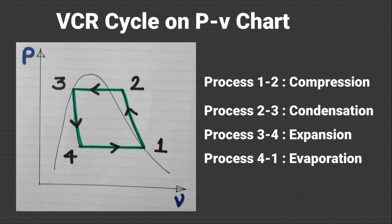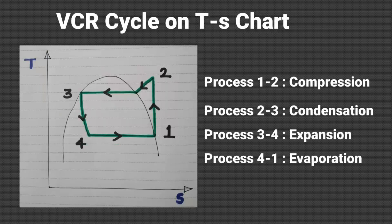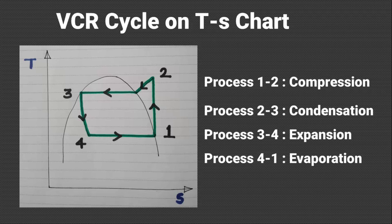The same vapor compression refrigeration cycle on the TS chart is shown in the next slide. Here on the horizontal axis there is enthalpy and on the vertical axis there is temperature. Process 1 to 2 shows the compression. The cycle we are discussing is the theoretical cycle, so compression is assumed to be isentropic, and the compression process is shown as a vertical line from 1 to 2. At state 2, the refrigerant vapor is in a superheated stage. Such superheated refrigerant is then cooled sensibly to saturation temperature first in the condenser, after which the refrigerant starts to condense. This saturated liquid refrigerant is then throttled through the expansion valve, shown by process 3 to 4, and process 4 to 1 is evaporation of refrigerant at constant temperature.